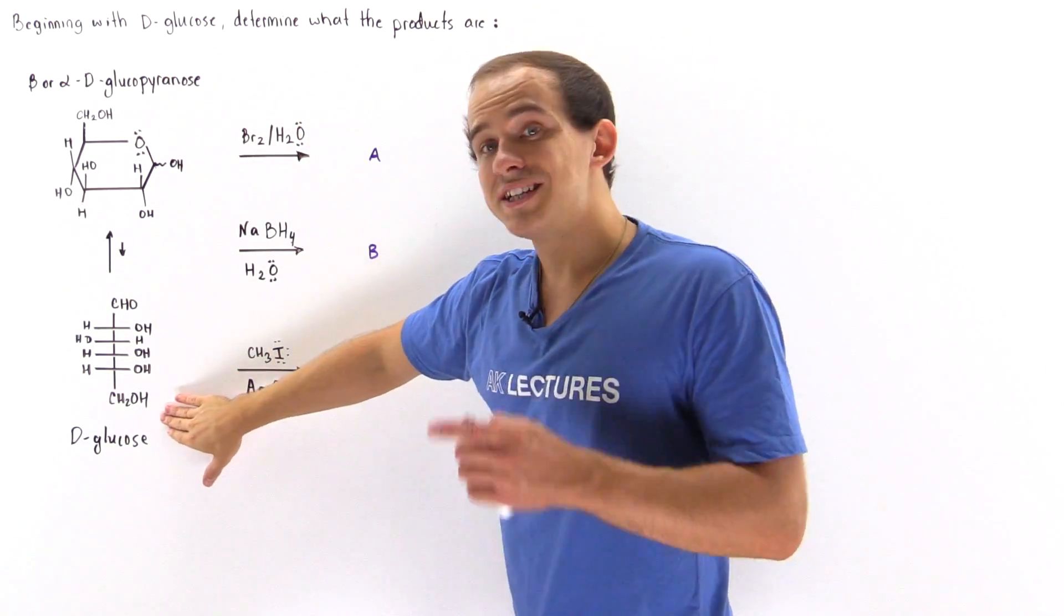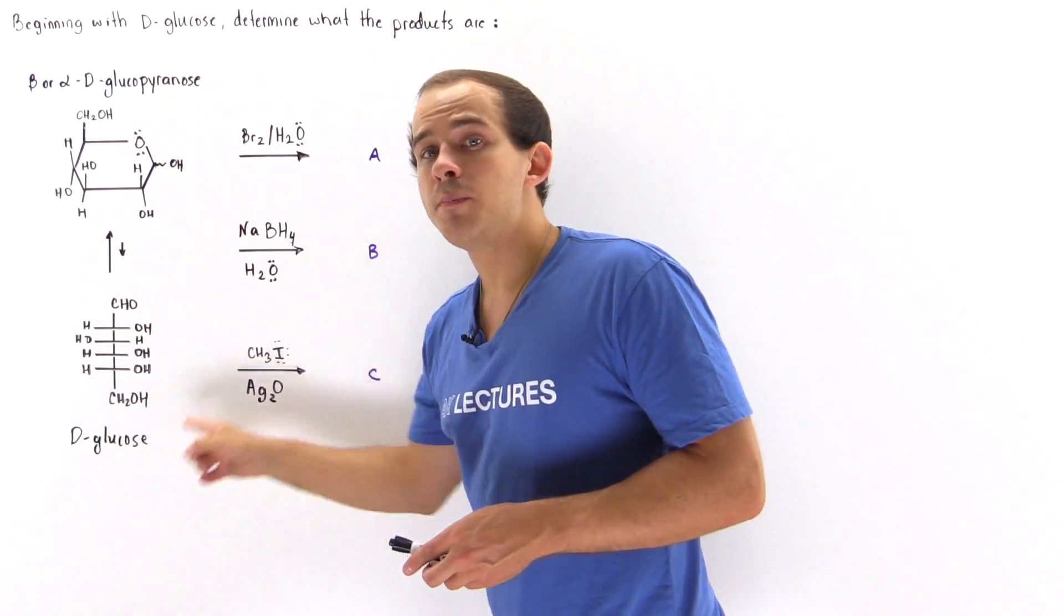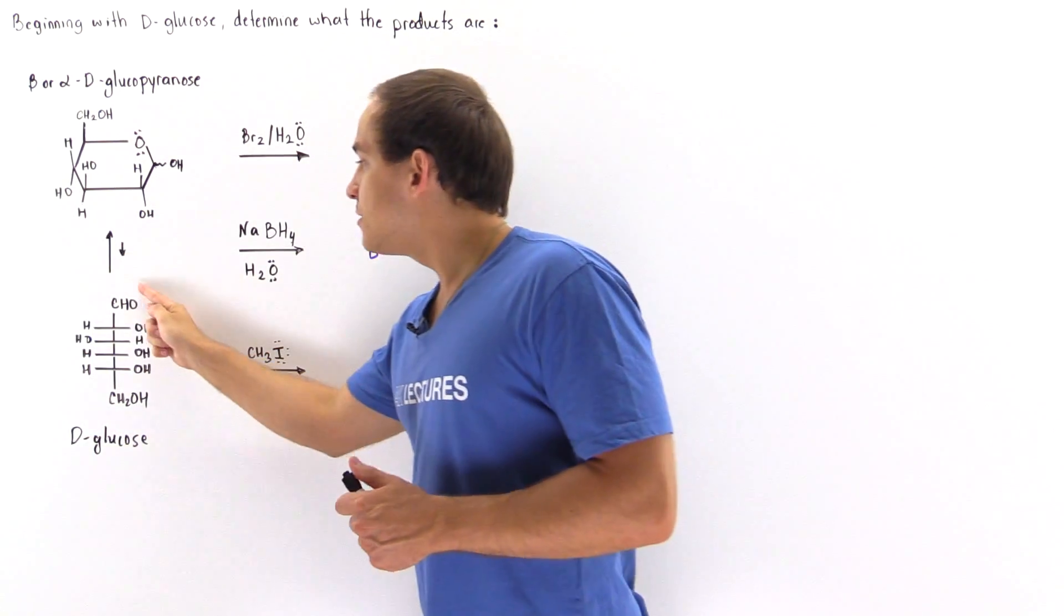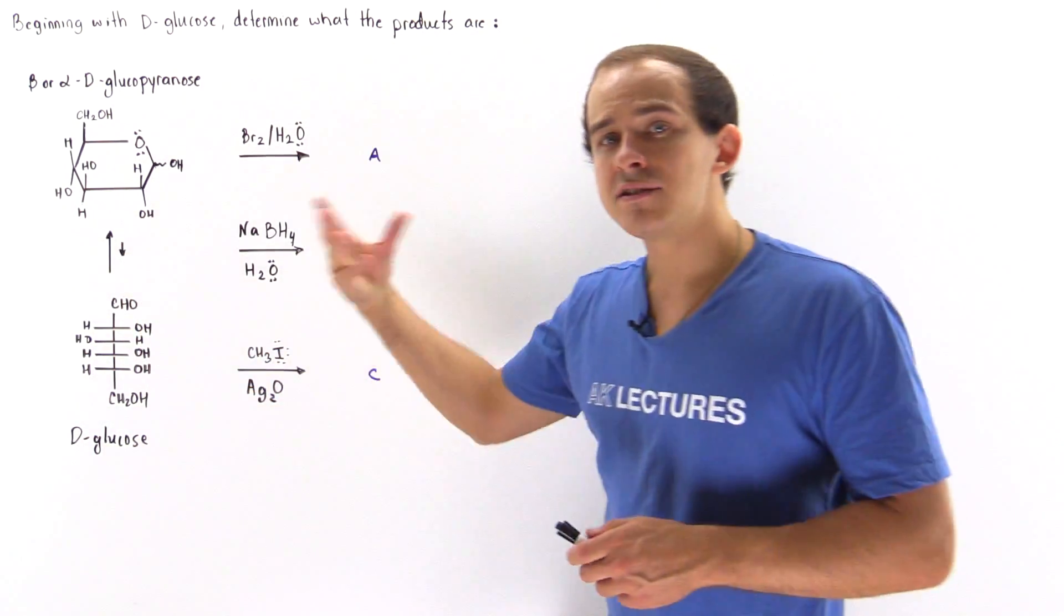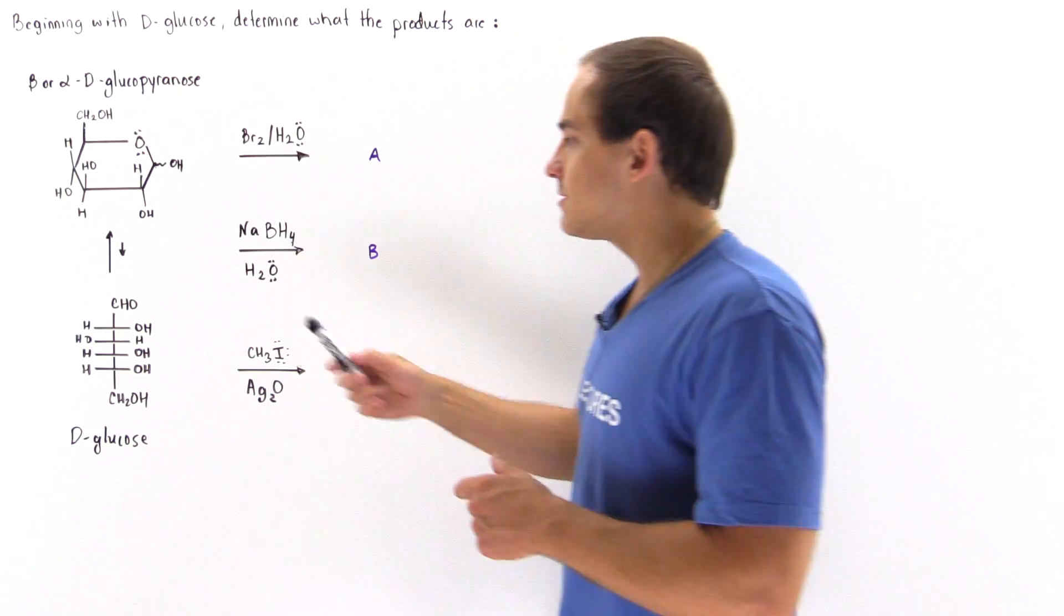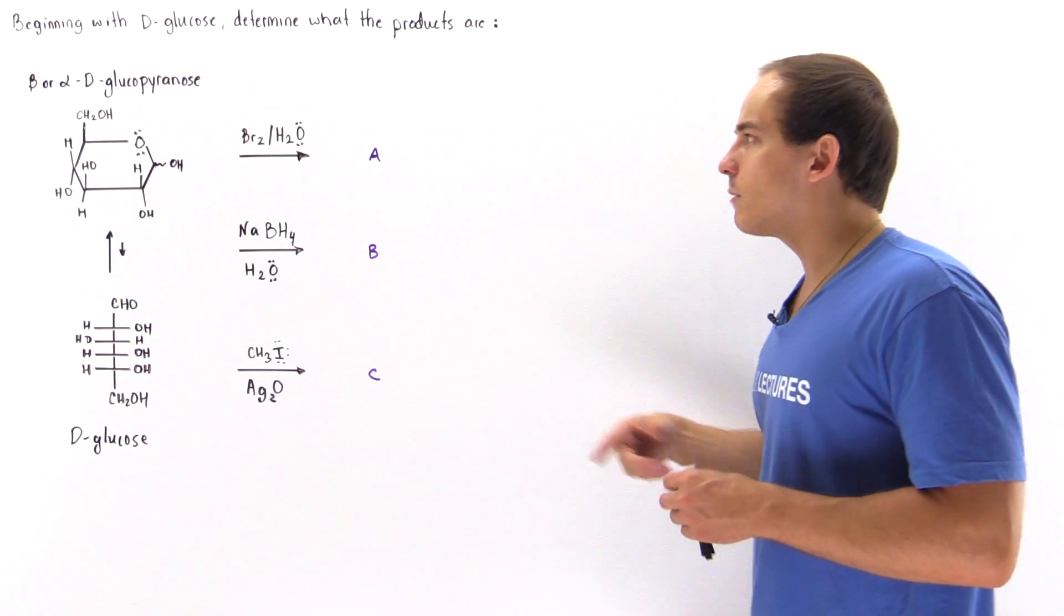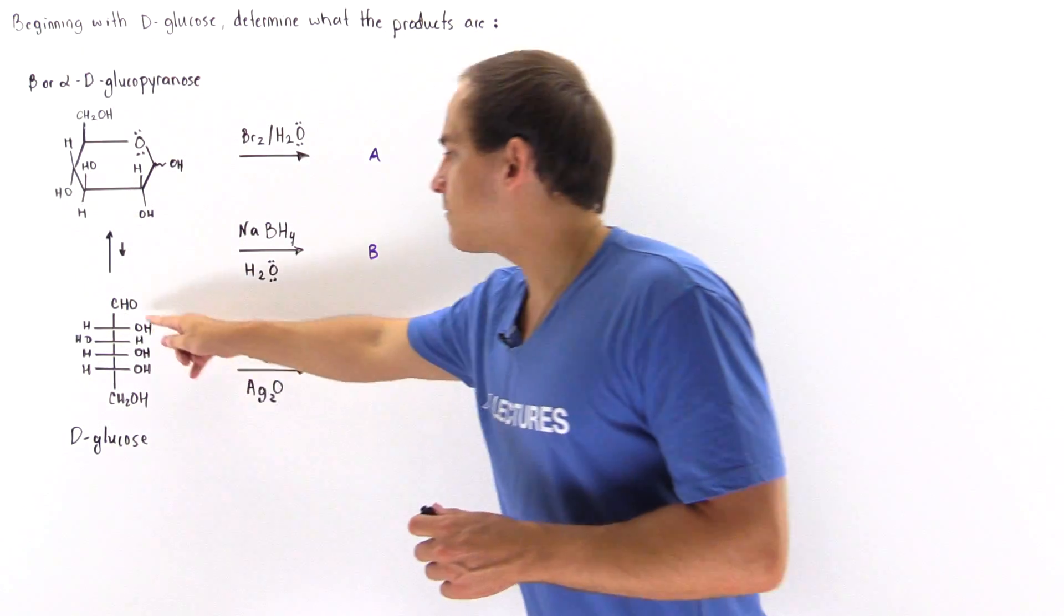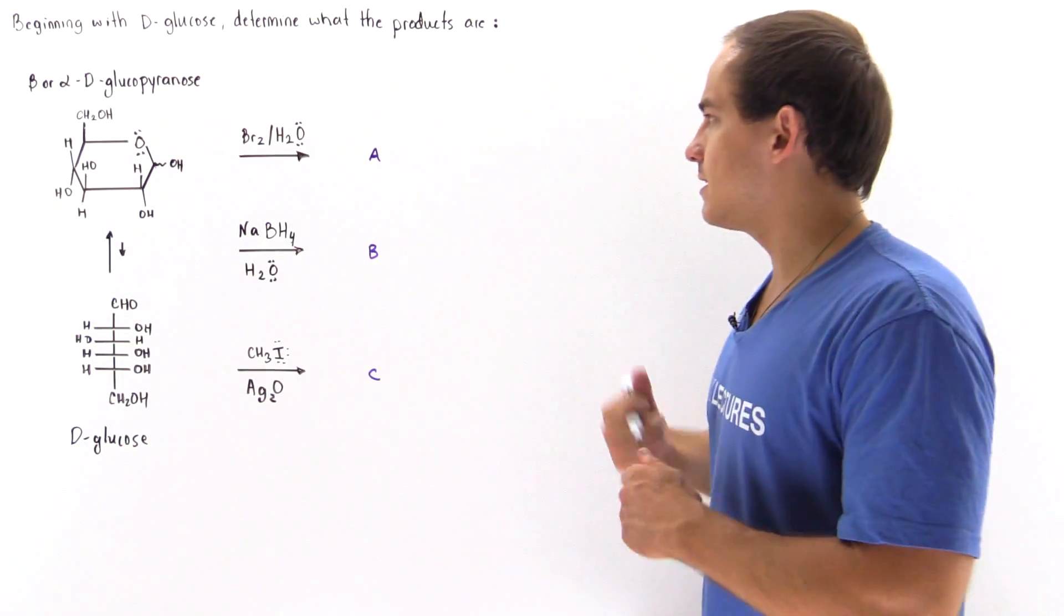So the bromine in water will react with the D-glucose open version, and this aldehyde will be oxidized into a carboxylic acid. So instead of this aldehyde we'll have our carboxylic acid group, and everything else will be left as it is.